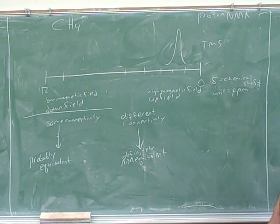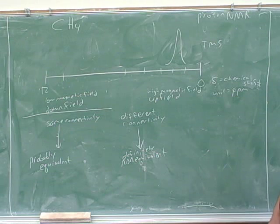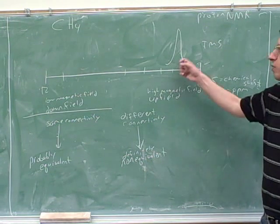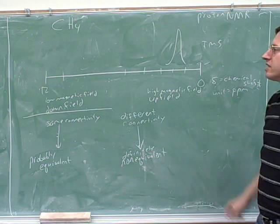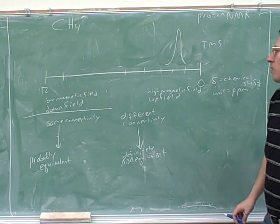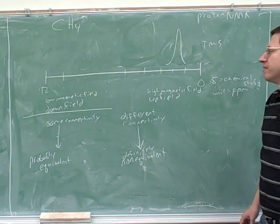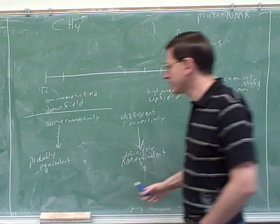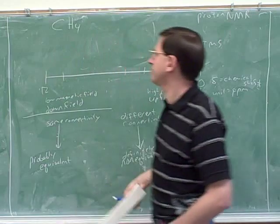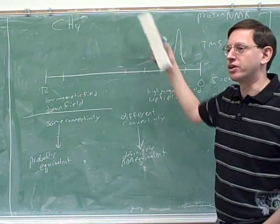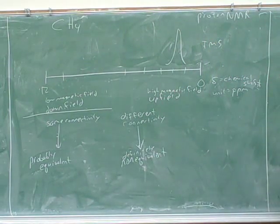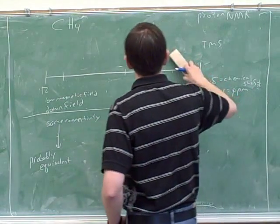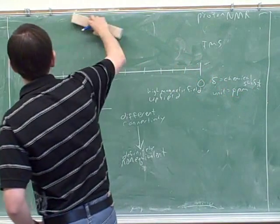Someone asked whether a C-H bond absorbs in high magnetic fields — that's true, but I don't want to get into the details of why just yet. Right now let's deal with one clue at a time. The main point is methane gives one peak; let's just focus on the number of peaks, because there are a whole bunch of different pieces of information we'll need to decipher one by one.